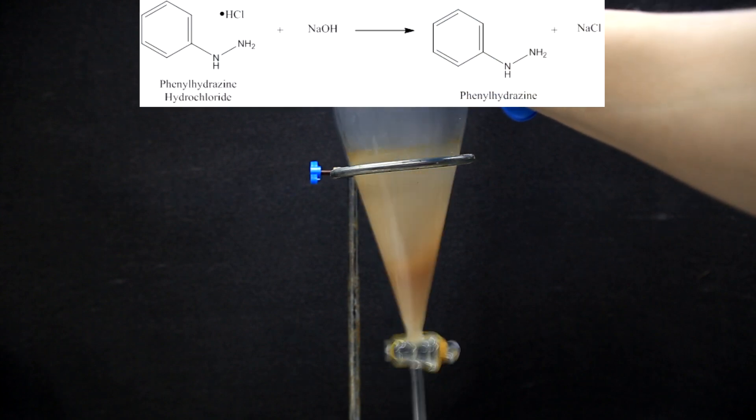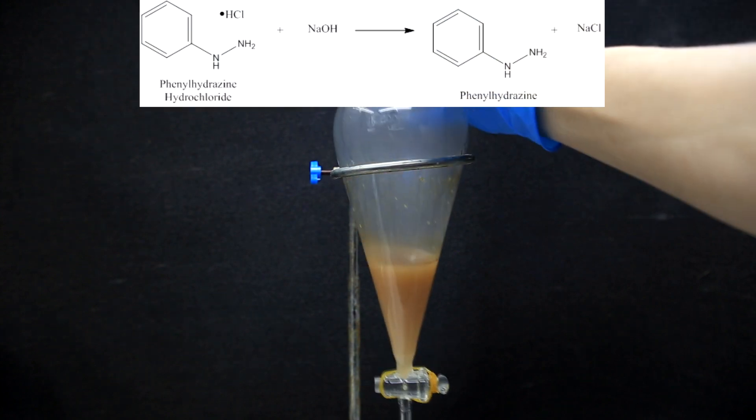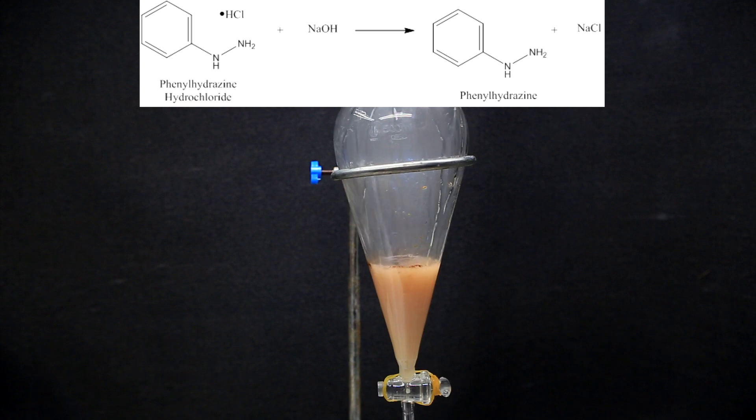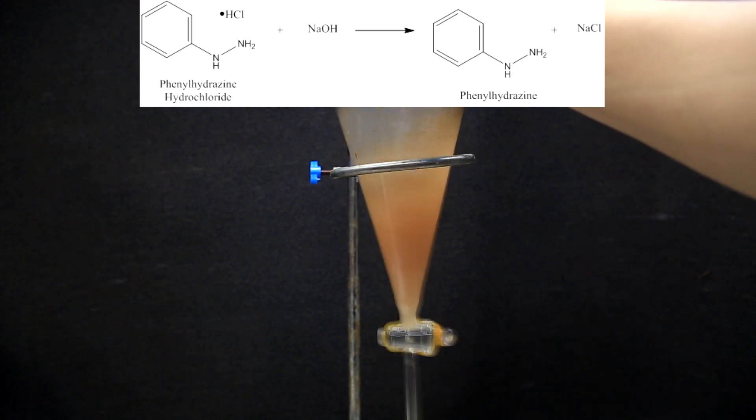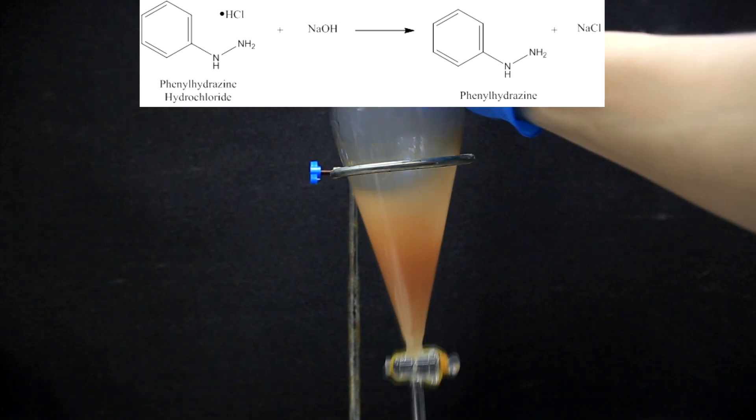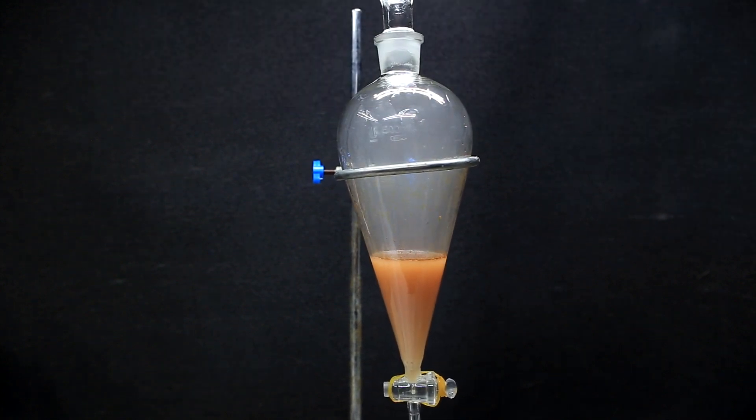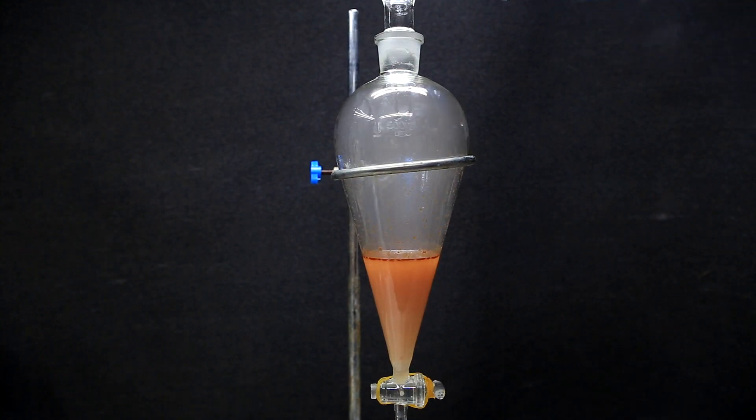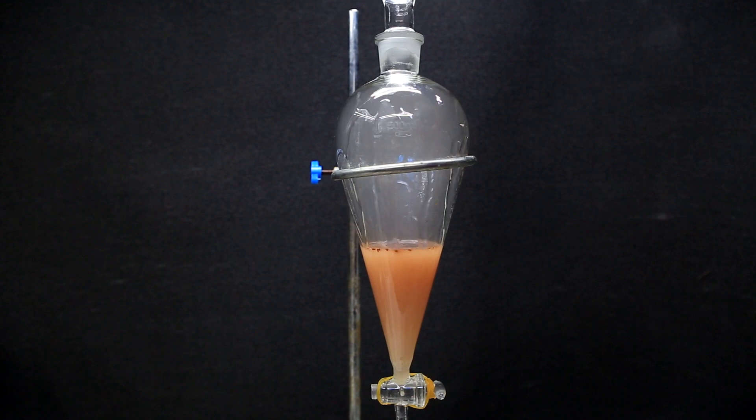So what we start with is phenylhydrazine hydrochloride and when it's reacted with the sodium hydroxide, we get the freebase phenylhydrazine and sodium chloride. The freebase will be soluble in organic solvents and the sodium chloride will remain in the water. In the end, I probably used way too much of the sodium hydroxide solution but it doesn't really matter.